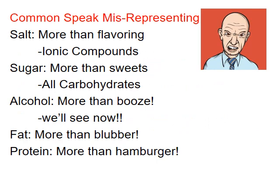Before going further, we need to open up our brains and become self-aware of what chemistry is about. In common speech, when you hear certain words you automatically think certain things. For example, when I hear people talk about salt as just a food flavoring, it's more than that. To a chemist, salt means any ionic compound - another name for ionic compound is the word 'salt.' It's more than just table salt.